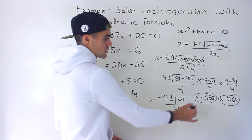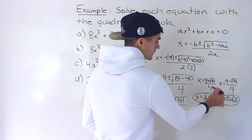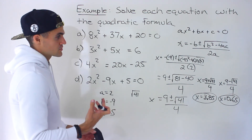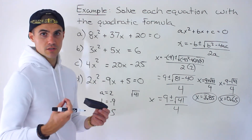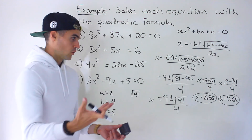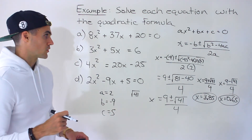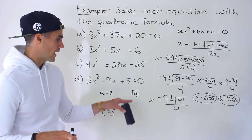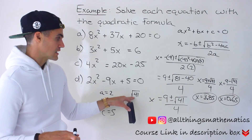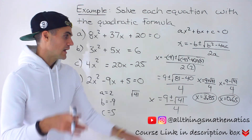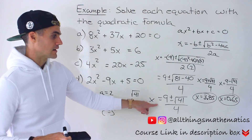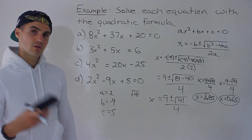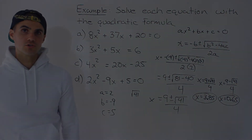If you want the decimal values, those would be the final decimals for both of these. So just a couple of examples using the quadratic formula. Over the next couple of videos, we're going to do a bunch more examples — different situations you may run into and more practice simplifying the roots you get to find more simplified exact values. So make sure you watch those videos.